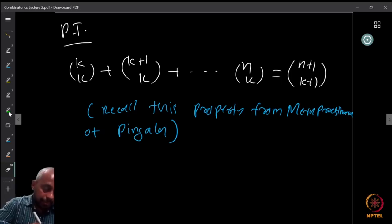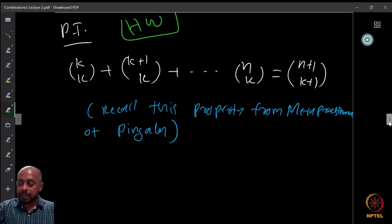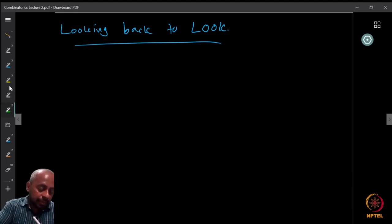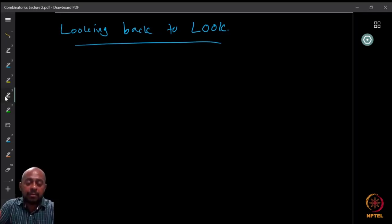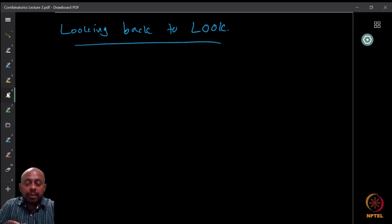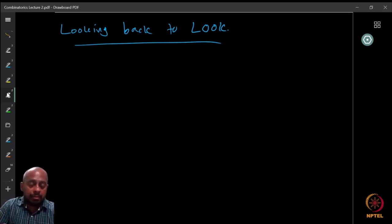This is homework. Now looking back at the anagrams of LOOK — I asked you to solve this yourself. You can use brute force and write down all possible words and count them. If you have done that, you should have found the answer is 12.